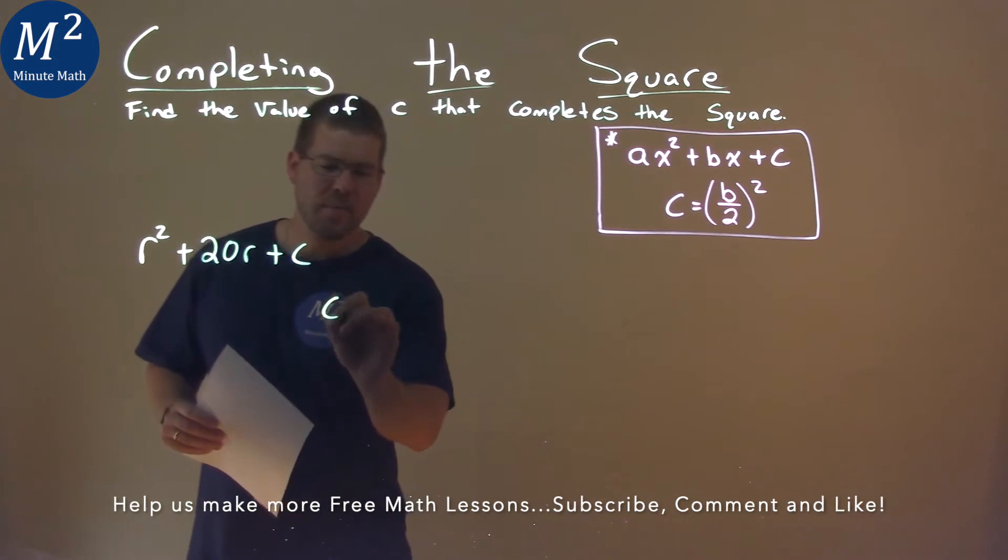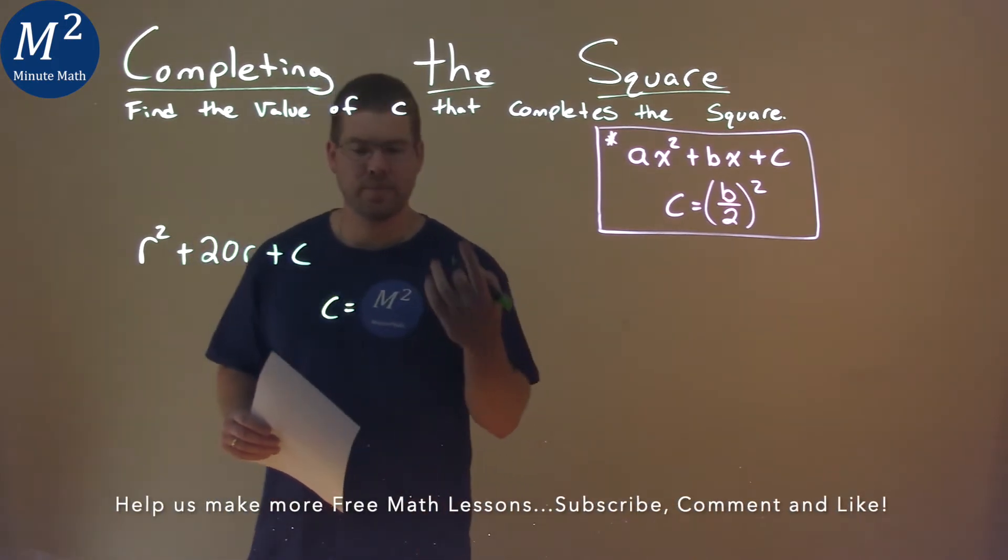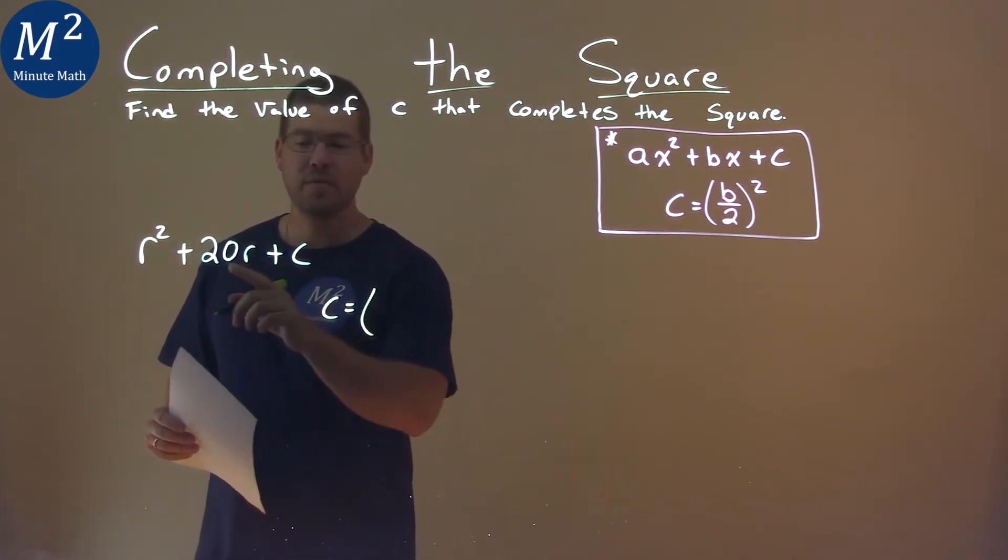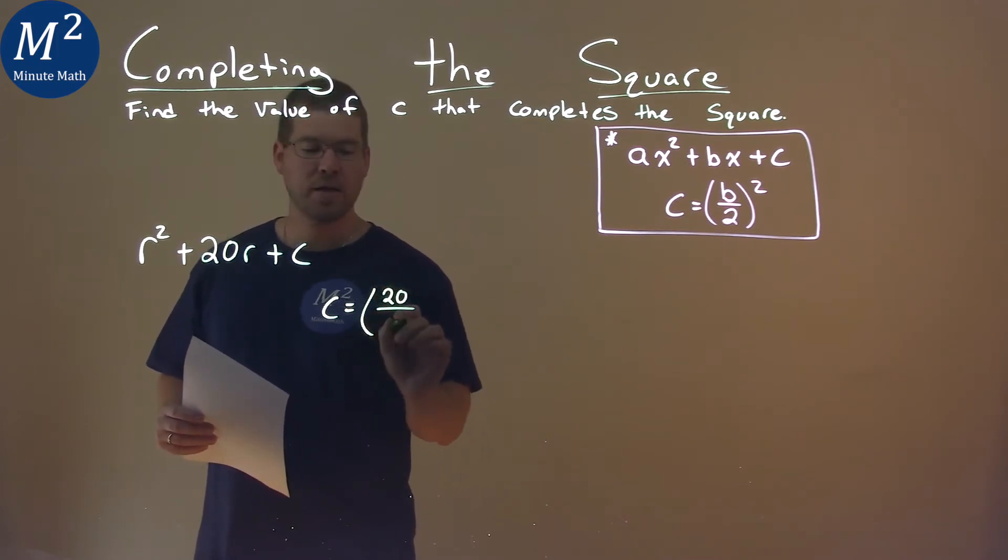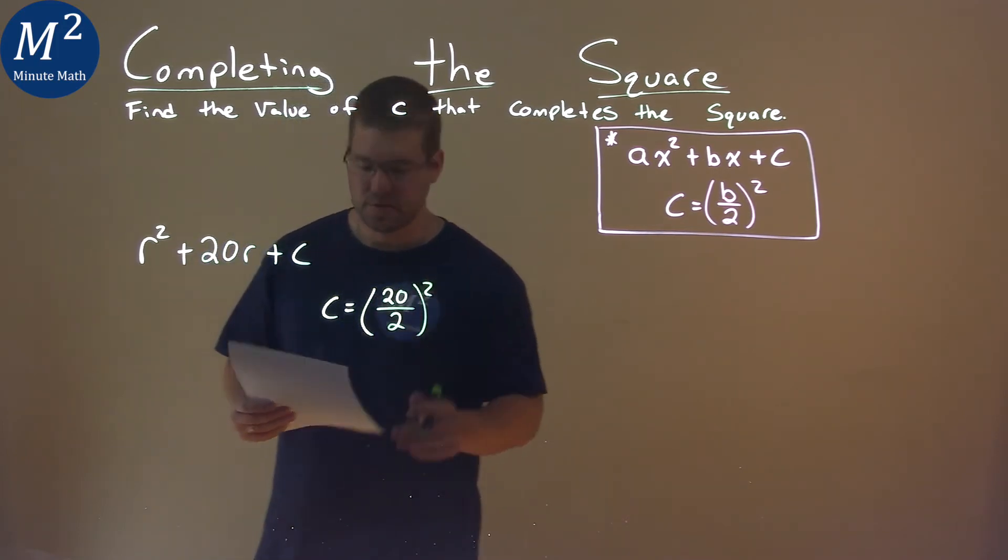I first have to take my c here, and I'm using my formula. c is going to equal my b value, which is 20, divided by 2, all squared.